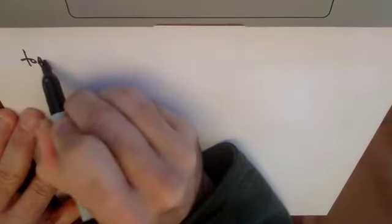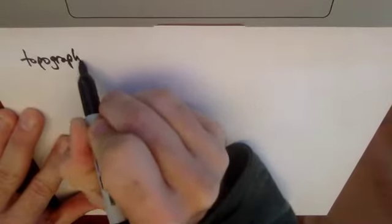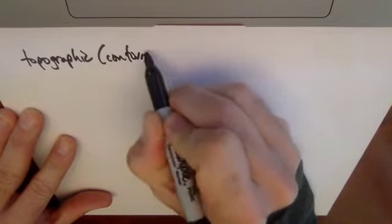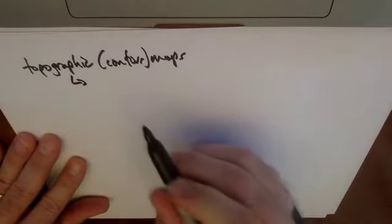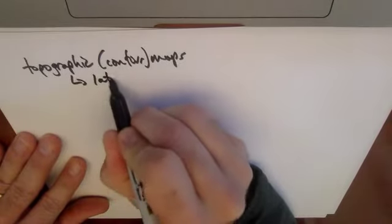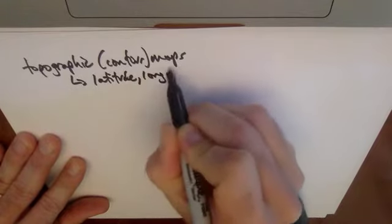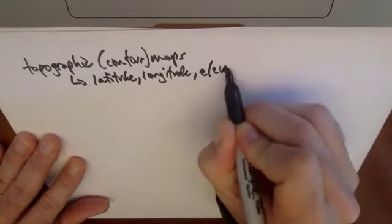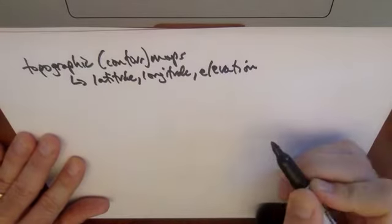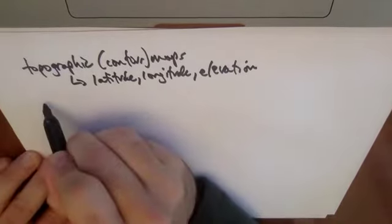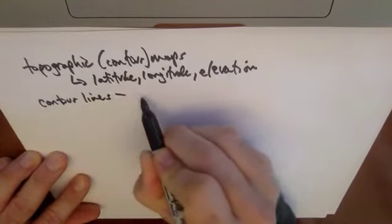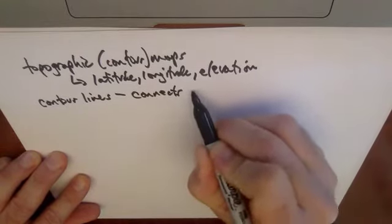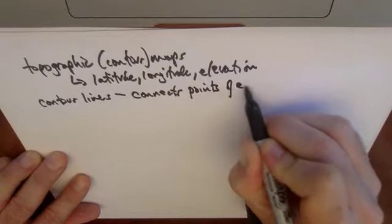So we're talking about topographic maps, which are also called contour maps. And the basis for a contour map is that it shows not just latitude and longitude, but also elevation. And it does this obviously in a two-dimensional plane. So the way it does that is by using these things called contour lines. And a contour line connects points of equal elevation.